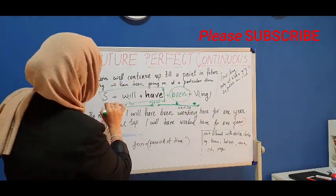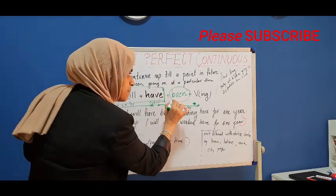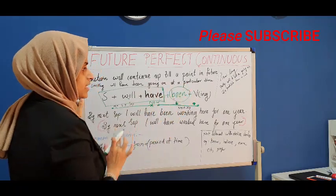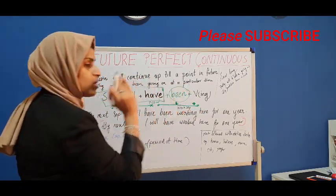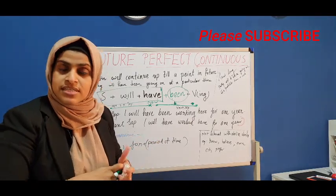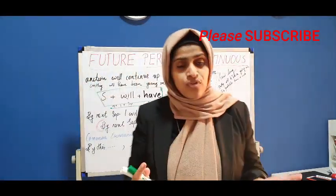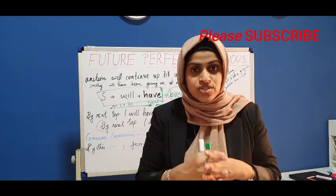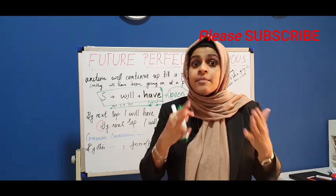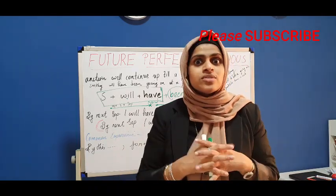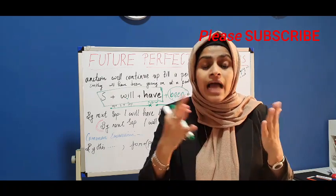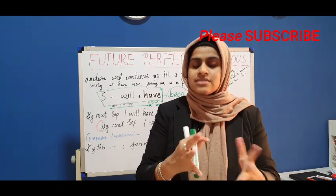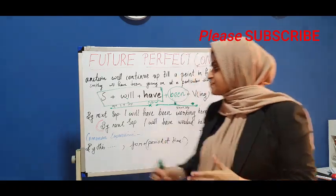I will have been working, she will have been working, they will have been working. We use the -ing form of the verb because it's continuous tense. So: future — will; perfect — will have; continuous — will have been + ing form of the verb. It's easy to make a sentence in future perfect continuous tense.